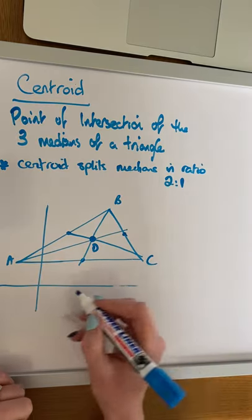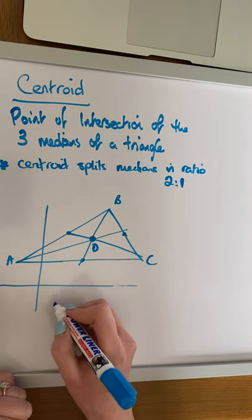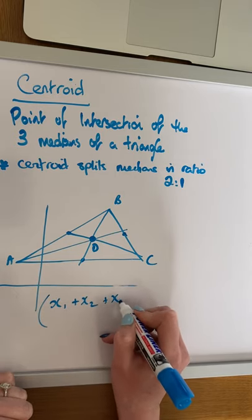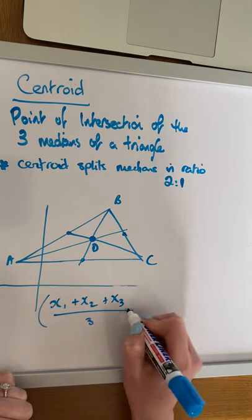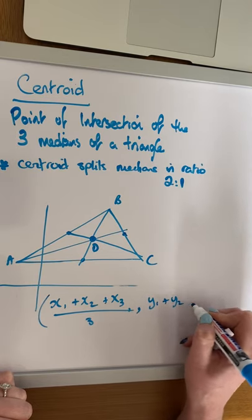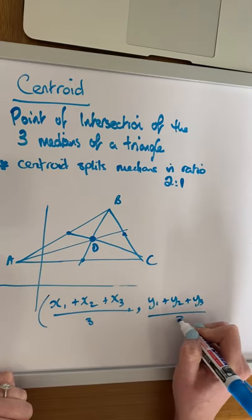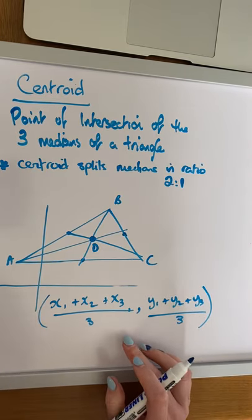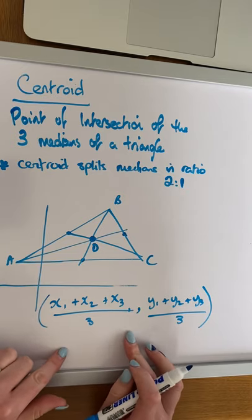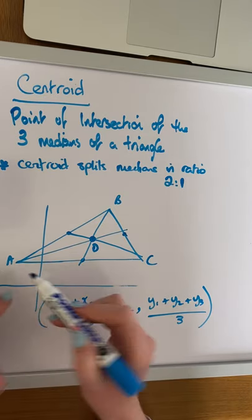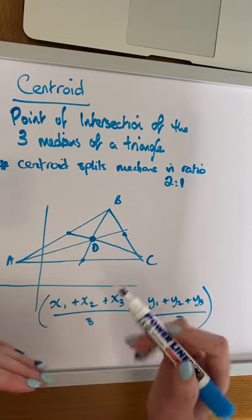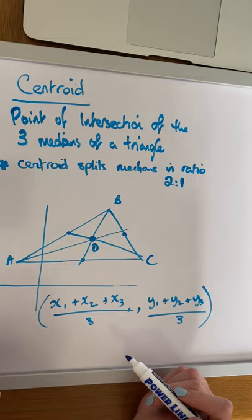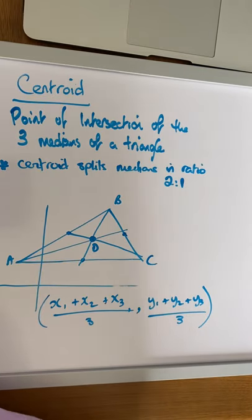Another way of finding the centroid algebraically is using the formula: x1 plus x2 plus x3 over 3, and y1 plus y2 plus y3 over 3. This is probably the easier of the two methods, and if given the choice I would always use this formula. However, if asked to find the equation of the line as a step towards finding the centroid, you would need to use method one as well.